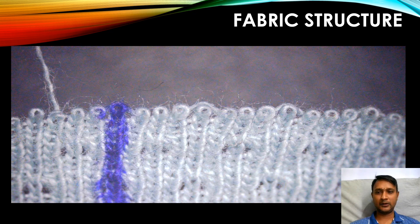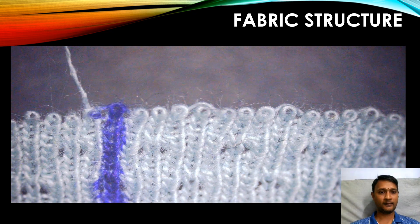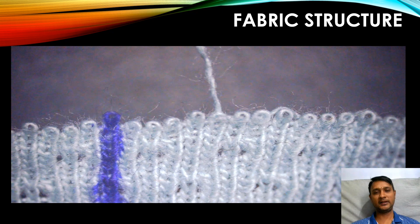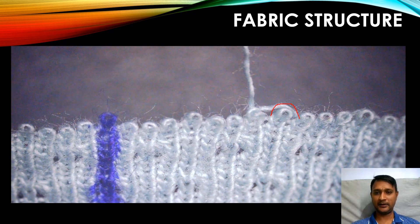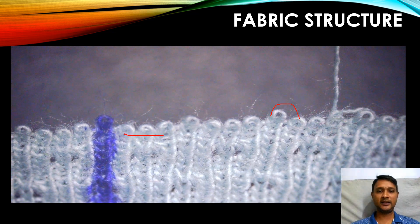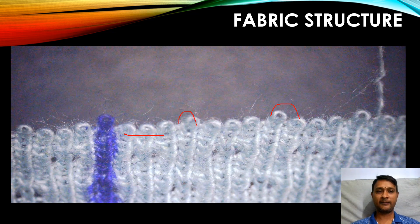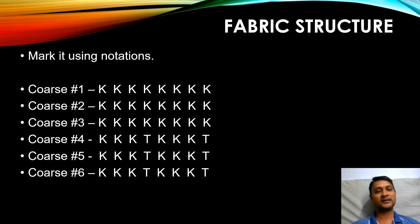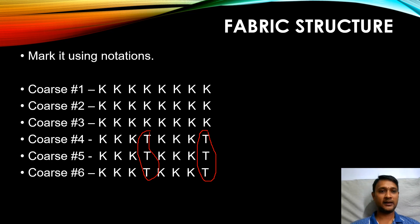Now we are going to unravel course number six. First is knit, second is knit, third needle is knit, fourth is tuck — we can find the half moon even here in needle eight. So the first three needles are knit and the fourth needle is tuck, again the next three needles are knit and again one tuck. Course numbers four, five, and six are all the same — continuously in the fourth needle we find a tuck structure. With our usual notation technique we have marked all six courses. Let's move on to course number seven.